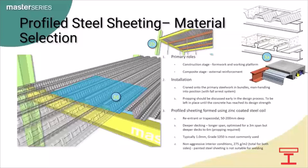For steel sheeting, in most cases designers refer to manufacturer's tables or software, which we will cover later. There are very informative product overview videos that go into detail on the numerous systems from the various composite decking manufacturers, available on YouTube. The steel sheeting serves as formwork and a working platform in the construction or temporary stage — this temporary stage typically governs the size of the sheeting. In the composite or permanent long-term stage, the steel sheeting serves as external reinforcement to resist the tension forces where sagging occurs at the mid-span of the sheet.